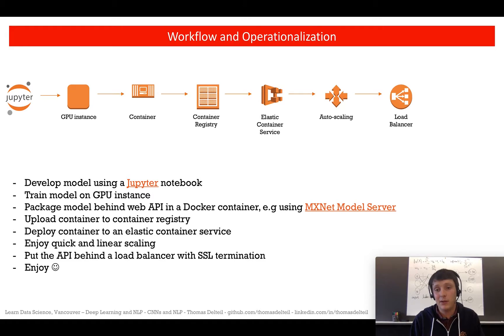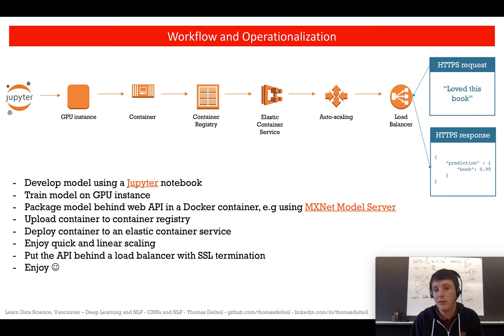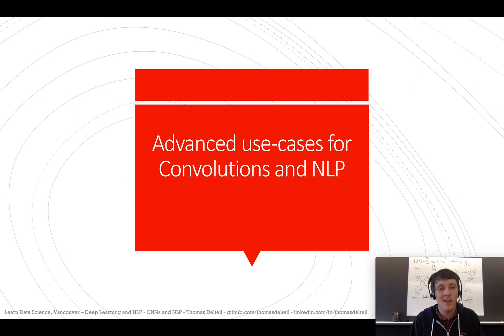Then you put your web API behind a load balancer. You can do SSL termination at the load balancer. You can send a request like 'love this book,' get back a response—yeah, it was about a book, good job. That's how you can deploy a model.